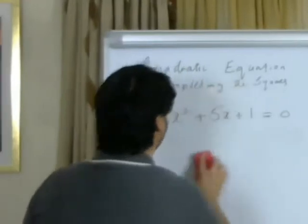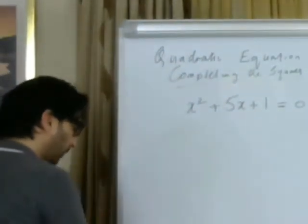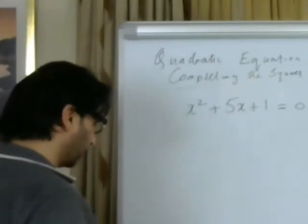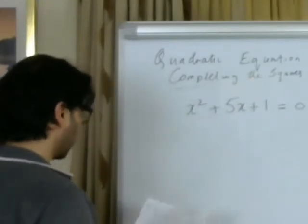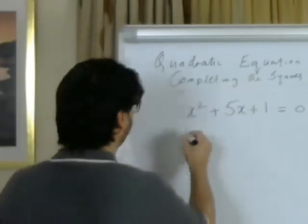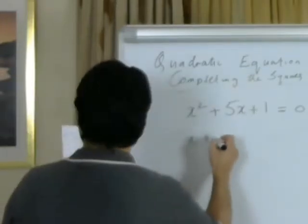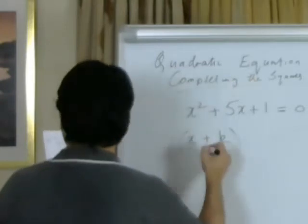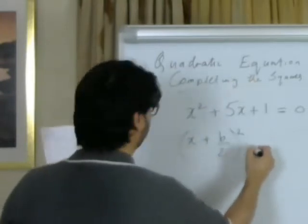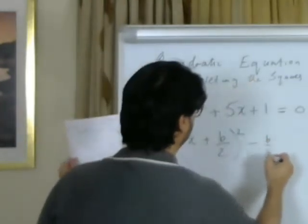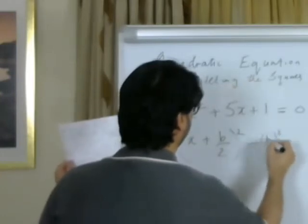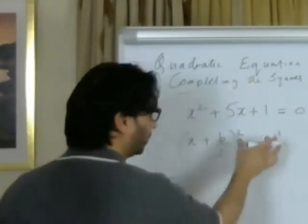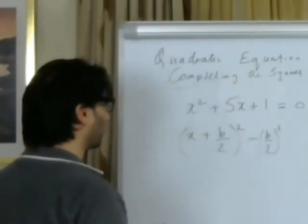In the completing the square method, we have a general formula which is: (x + b/2) squared minus (b/2) squared. That's the general formula we apply when we use the completing the square method.